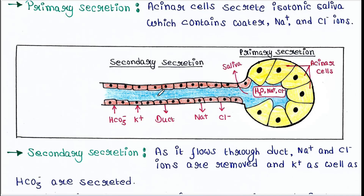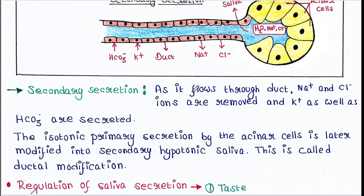In secondary secretion, as the isotonic saliva flows through the duct, the sodium and chloride ions are removed from the saliva and absorbed into the blood, while potassium ions and bicarbonate ions are secreted into the saliva.